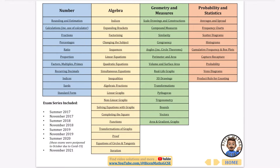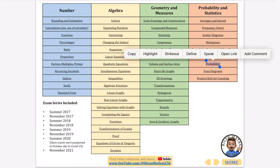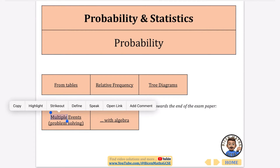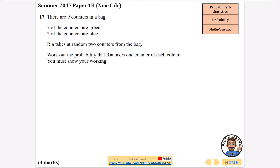Hey guys, it's Mr. Bison here and I'm continuing with every exam question that's ever been asked on probability. I'm now going to be focusing on multiple events where there's often a bit of problem-solving, and these tend to be questions that are usually towards the end of the exam paper. Now if you want to use this document it is always in the description so you can download it. Some of these questions you could do with the tree diagram but they can hold you back as tree diagrams get bigger, so I'm going to show you other ways of doing it, though using a tree diagram is absolutely fine as well.